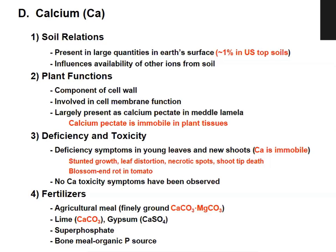Fertilizers used to correct calcium deficiency include agricultural lime (CaCO3), calcite, dolomite, gypsum (calcium sulfate), superphosphate, and bone meal.